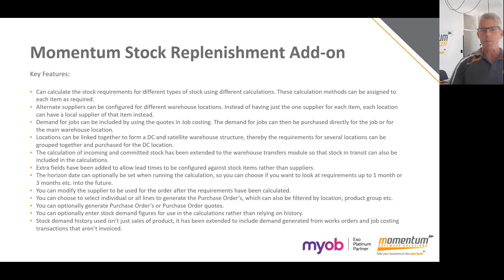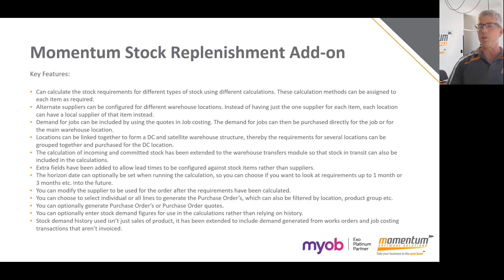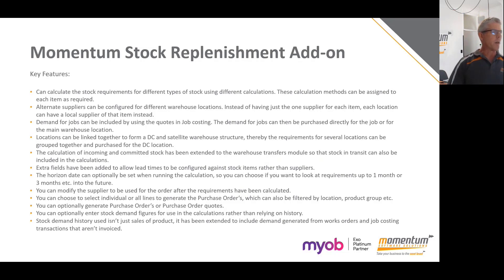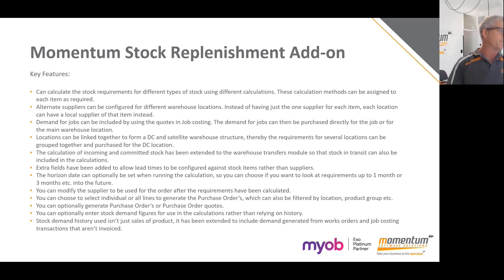We've also utilized extra fields on inventory items to allow a different lead time for different products from the same supplier. For example, supplier A may deliver certain local products within two days, but other products take seven days. The standard feature in EXO uses a lead time per supplier, but sometimes a lead time per product is valid. We've also looked at using planning horizons for forecasting and MRP.